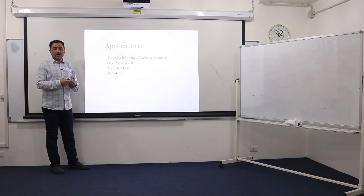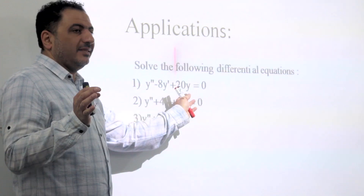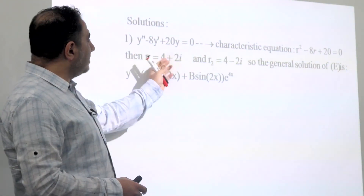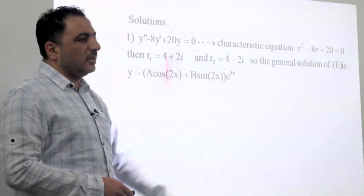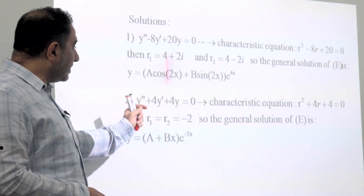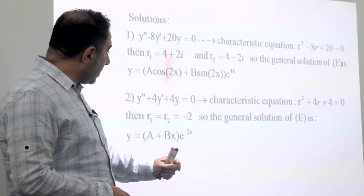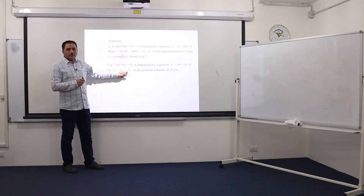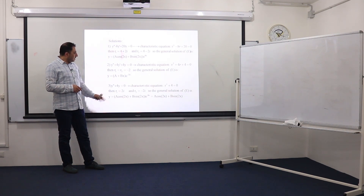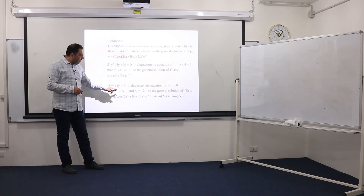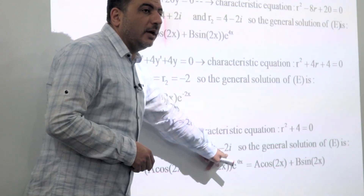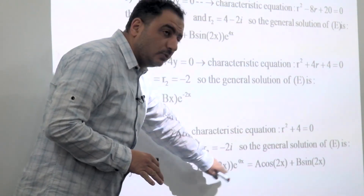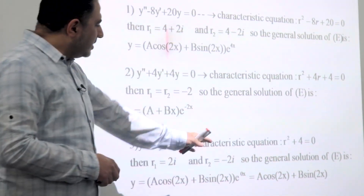Let us solve some differential equations as applications. For each equation, write the characteristic equation first — don't skip any step. The first equation has two complex roots; simply apply the formula directly. The second equation, y'' + 4y' + 4y = 0, has characteristic equation r² + 4r + 4 = 0, giving a double root r = -2; plug in to get the solution. The third example has characteristic equation r² + 4 = 0, with complex roots ±2i. Here α = 0 and β = 2, so y = a·cos(2x) + b·sin(2x), since e^(0·x) = 1.